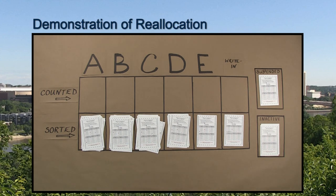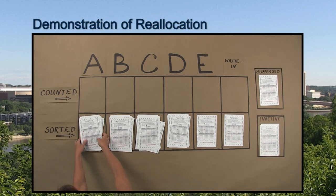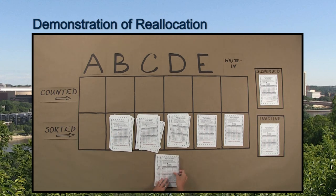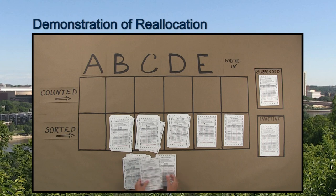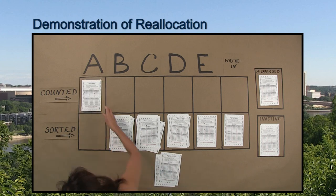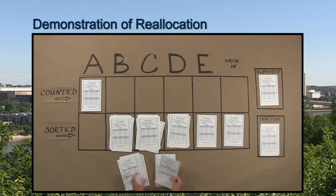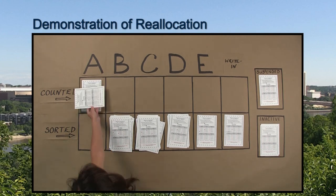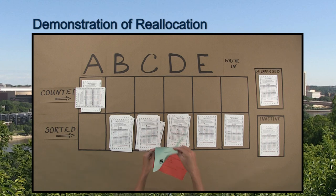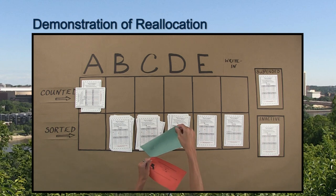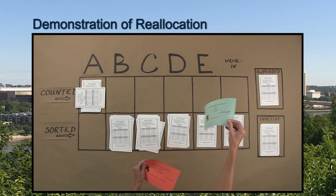Once all the ballots have been sorted into first choice piles, each candidate pile is counted into groups of 25 and the total of first choice votes is determined. After all ballots for a candidate have been counted, the vote totals are recorded onto summary statements.